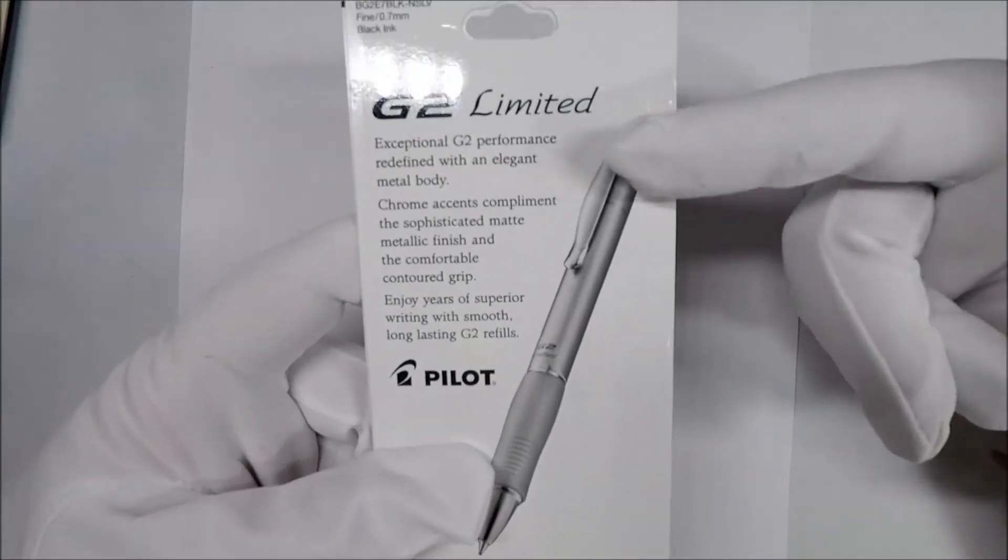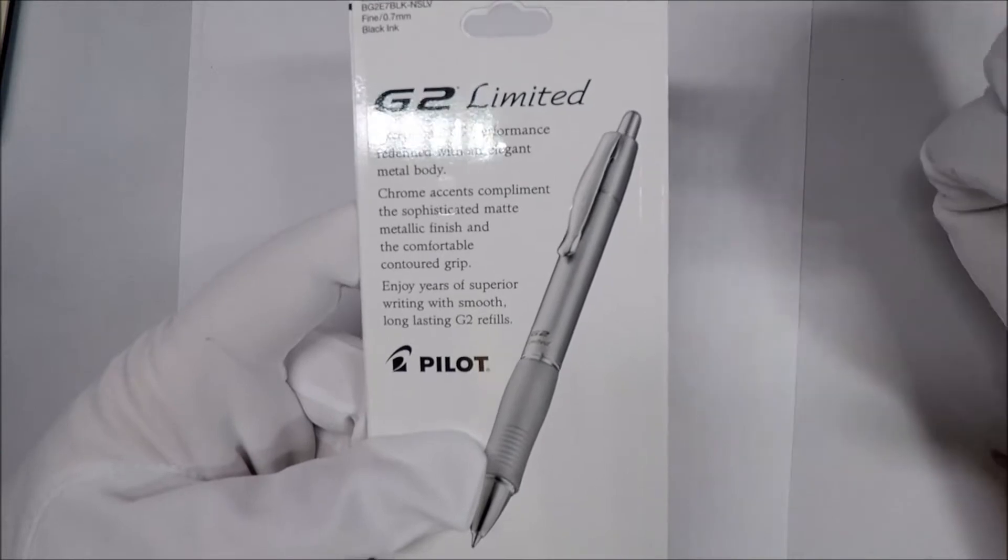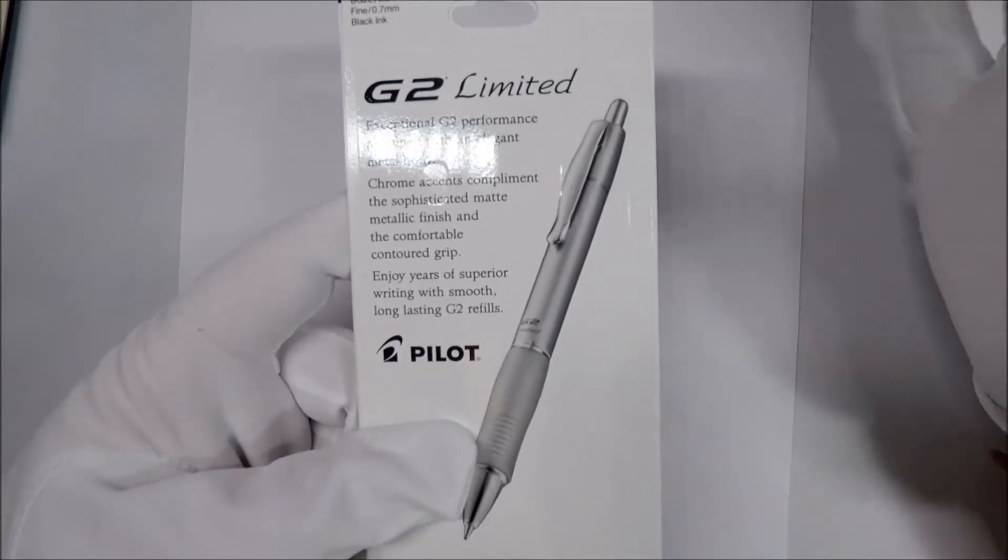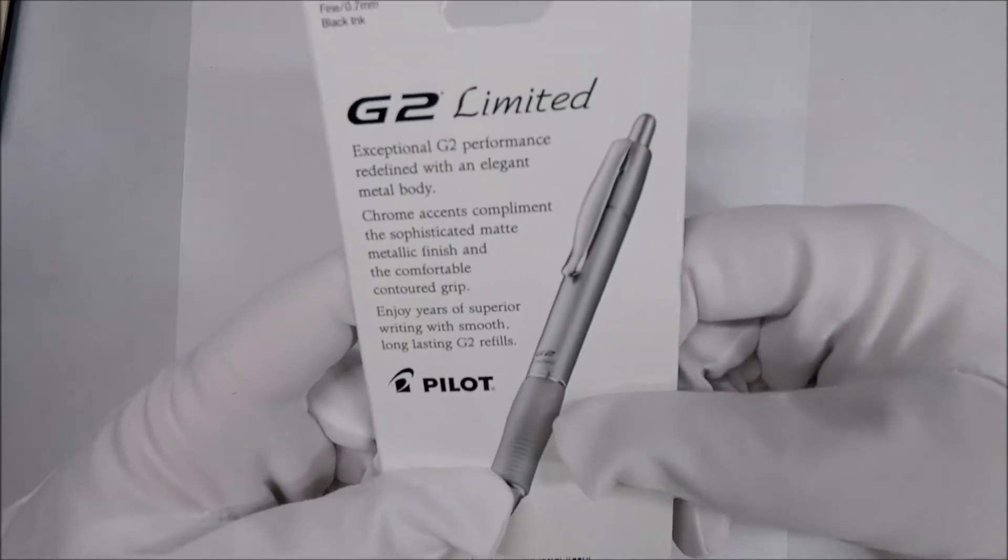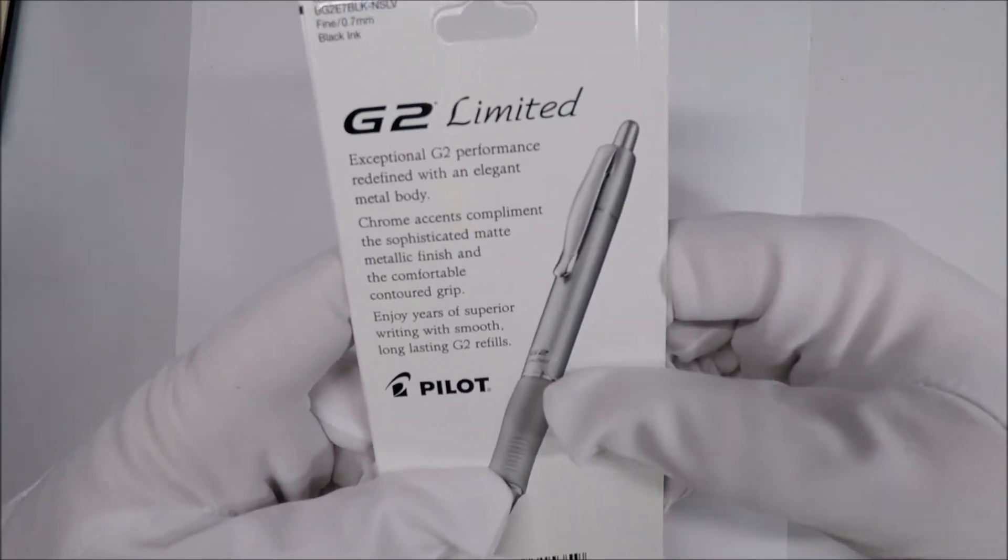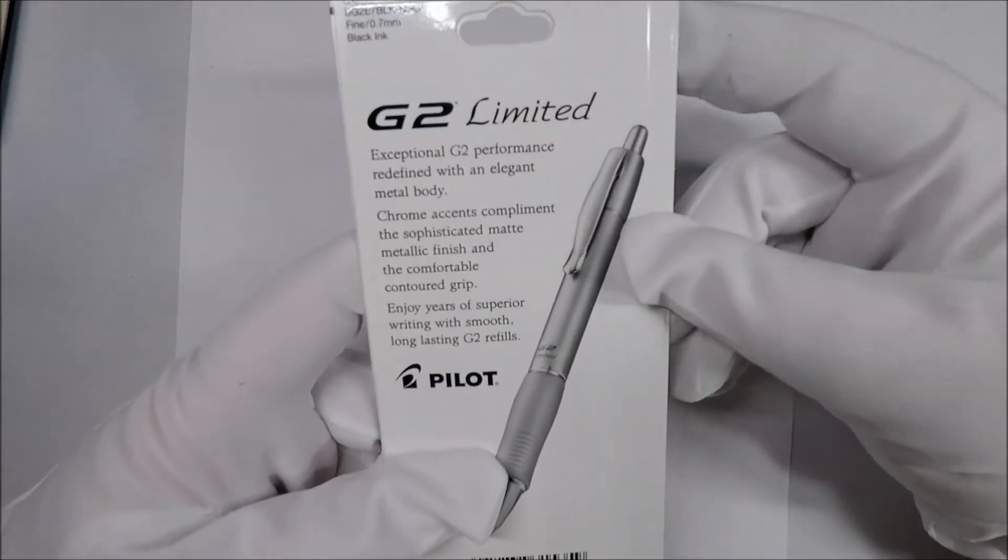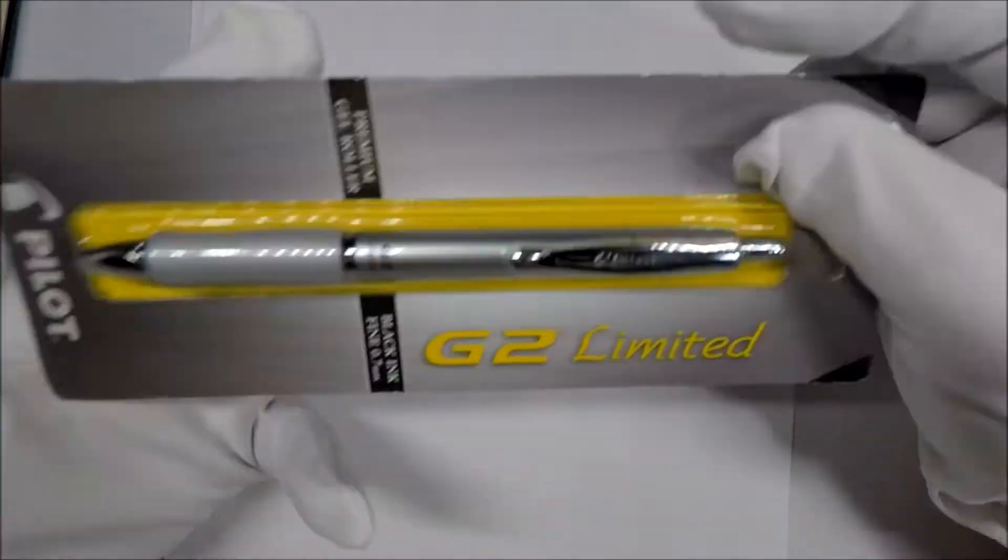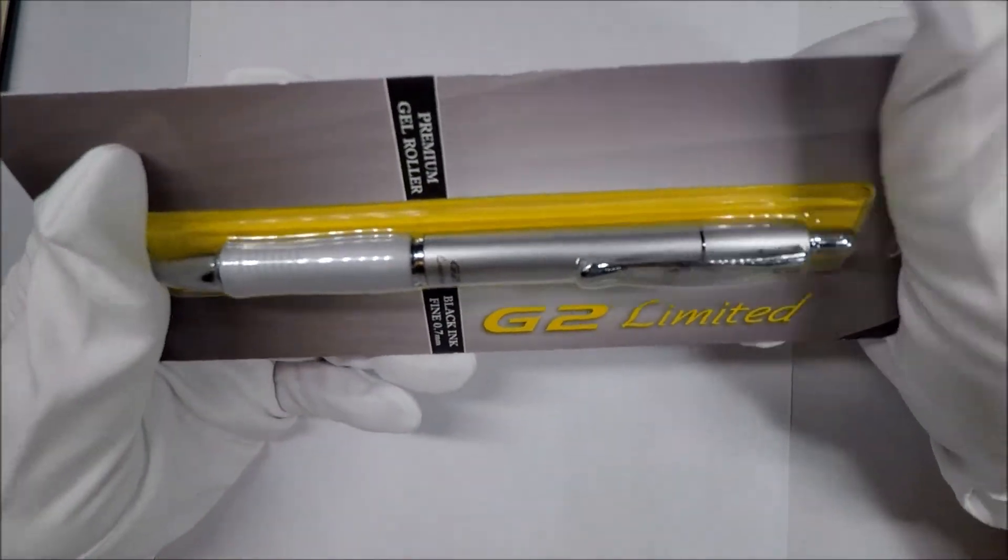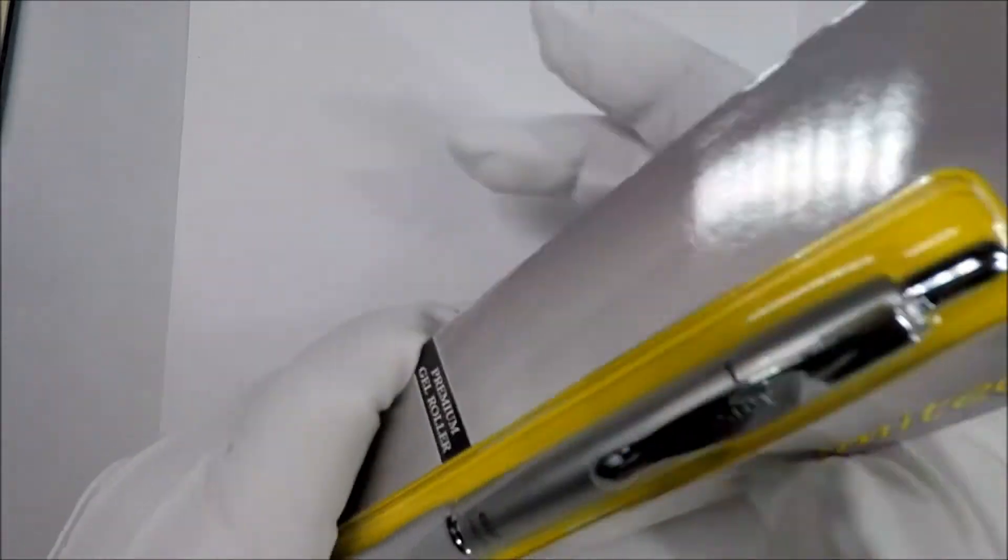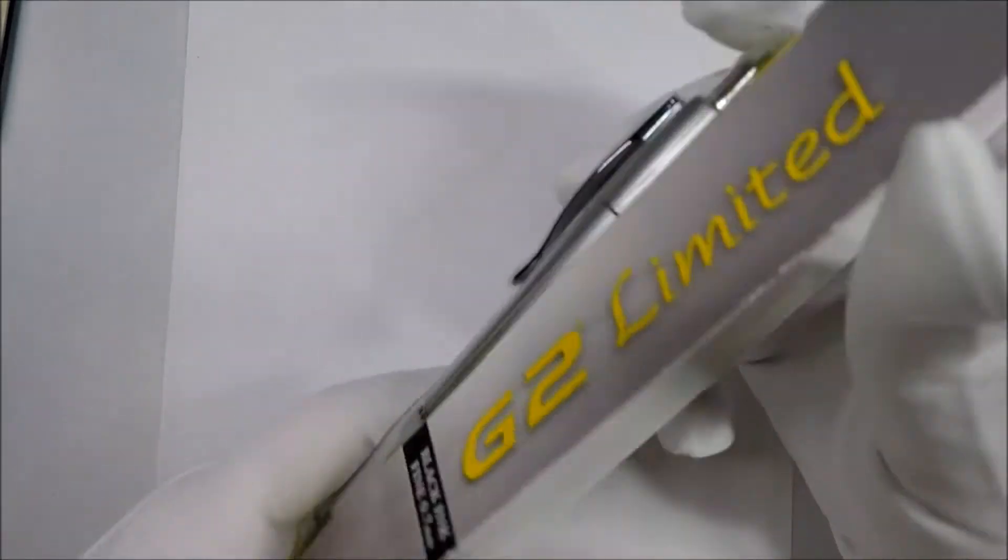It's got a metallic barrel and it's just a little fancier. As you can see it's got an elegant metal body. Now the whole metal body thing I am a little apprehensive about - I think it's metal coated but I'm not 100% sure. I'll tell you better when we open it up. This particular one is a fine point, 0.7 millimeters. So let's open this thing up and take a look at it.